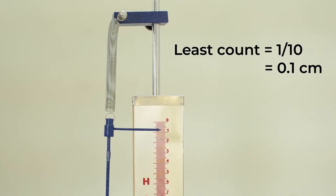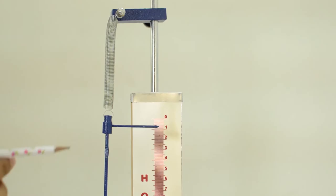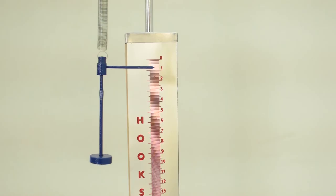There are 10 divisions between 0 to 1. So, the least count of the scale is 1 by 10, equals to 0.1 centimeter. The hanger has a weight of 20 grams hanging from the hook.